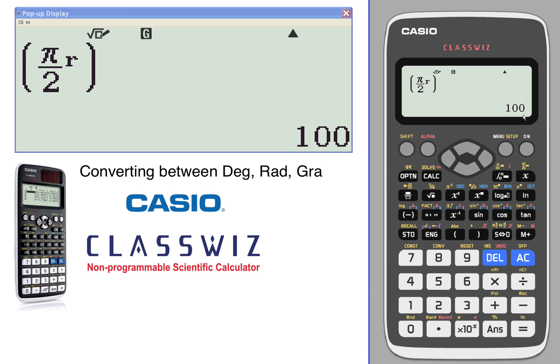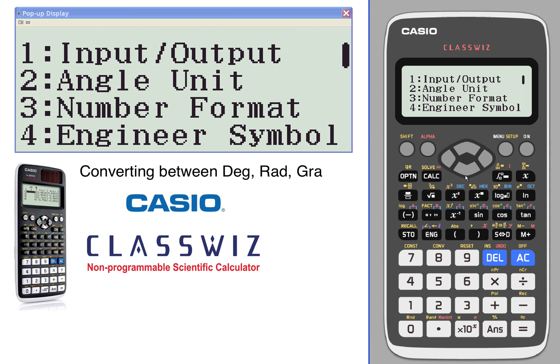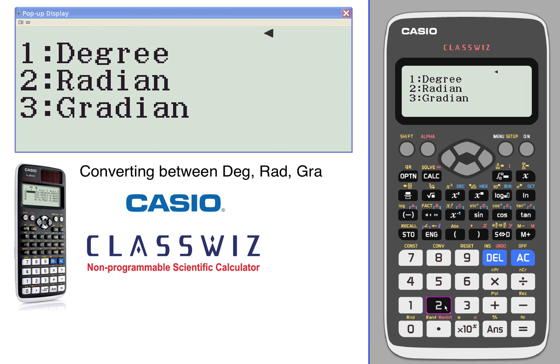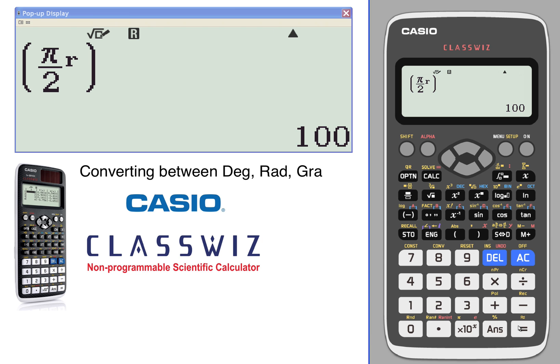As soon as we hit equals again, it recalculates it. Let's go back to degrees, or this time let's go back to radians. So we'll go to radians this time. That gives us our exact same answer, but now that we're in radian mode...